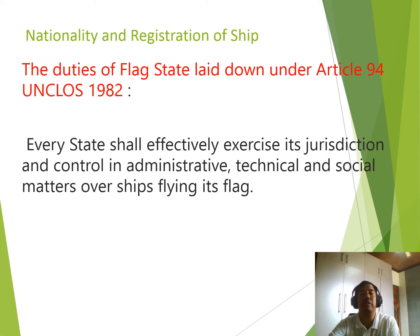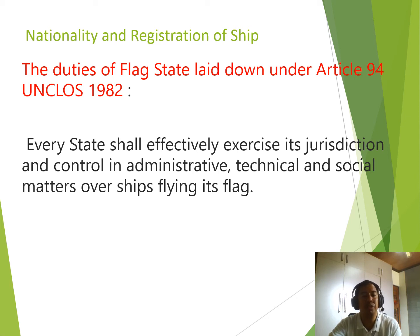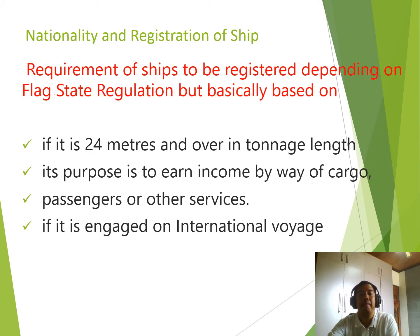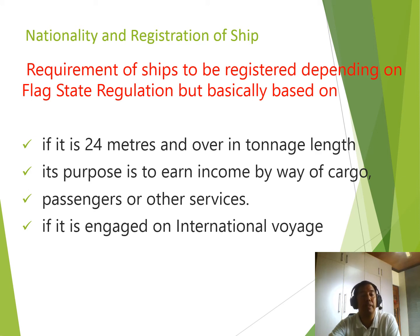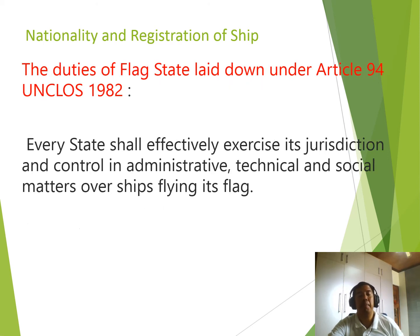The duties of flag state are laid down under Article 94 of UNCLOS 1982 — every state shall effectively exercise its jurisdiction and control in administrative, technical, and social matters over ships flying its flag. Requirements for a ship to be registered depend on the flag state regulation, but based on one flag state, the vessel should be 24 meters and over in tonnage length, its purpose is to earn income by way of cargo, passengers, or other services, and it is engaged on international voyages.